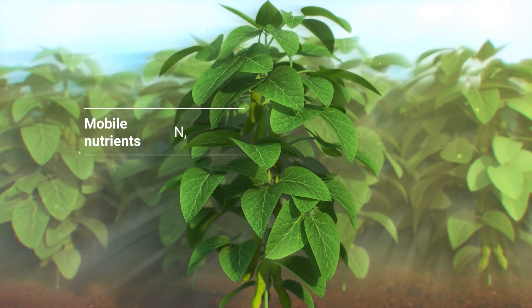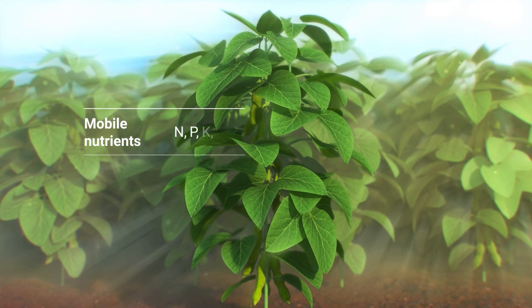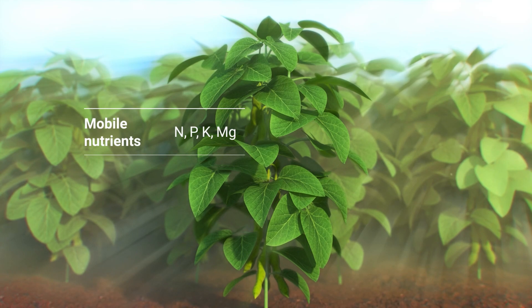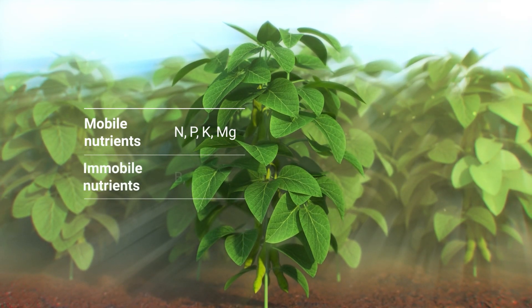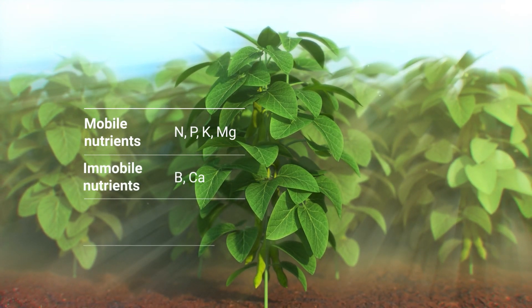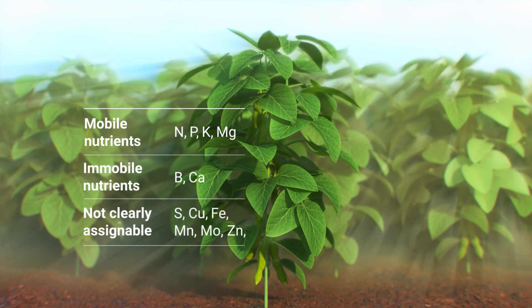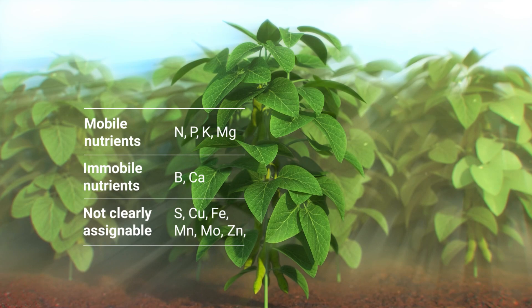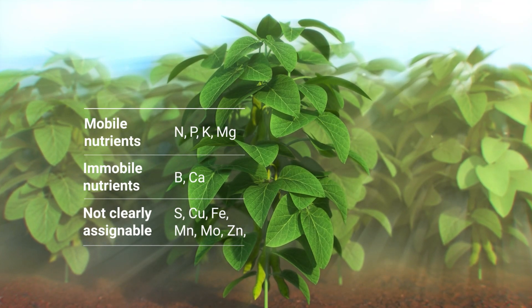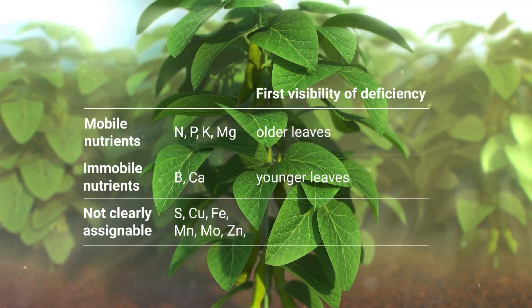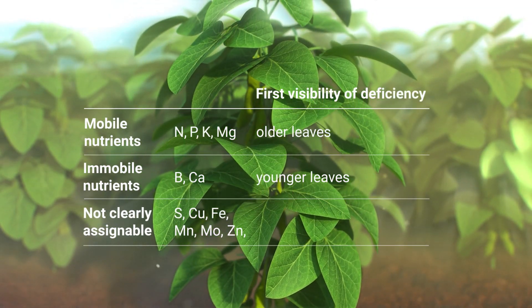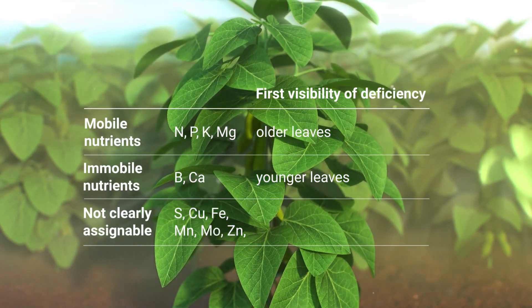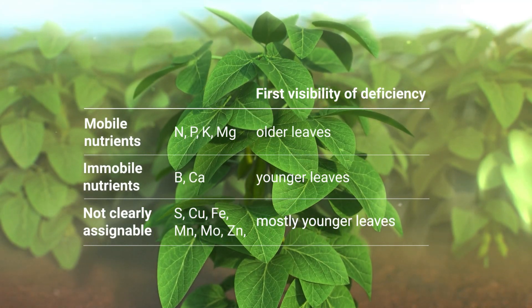The nutrients that are mobile in almost all plants are nitrogen, phosphorus, potassium and magnesium. The least mobile are boron and calcium. All other nutrients cannot clearly be assigned and mobility often differs between different plant species. Nevertheless, deficiency symptoms of these limited mobile nutrients more often appear on younger plant parts first.